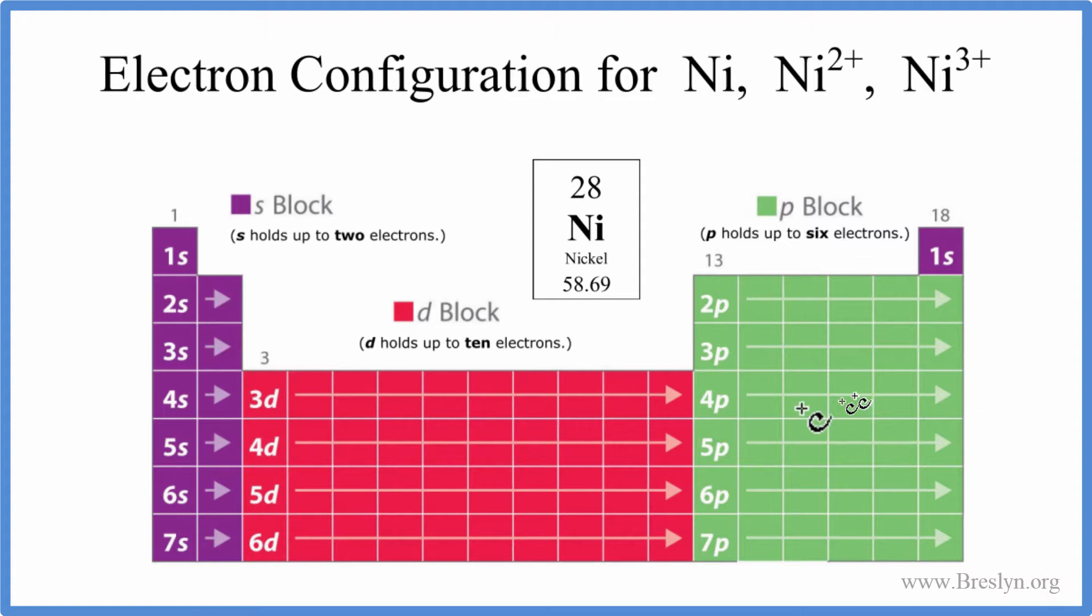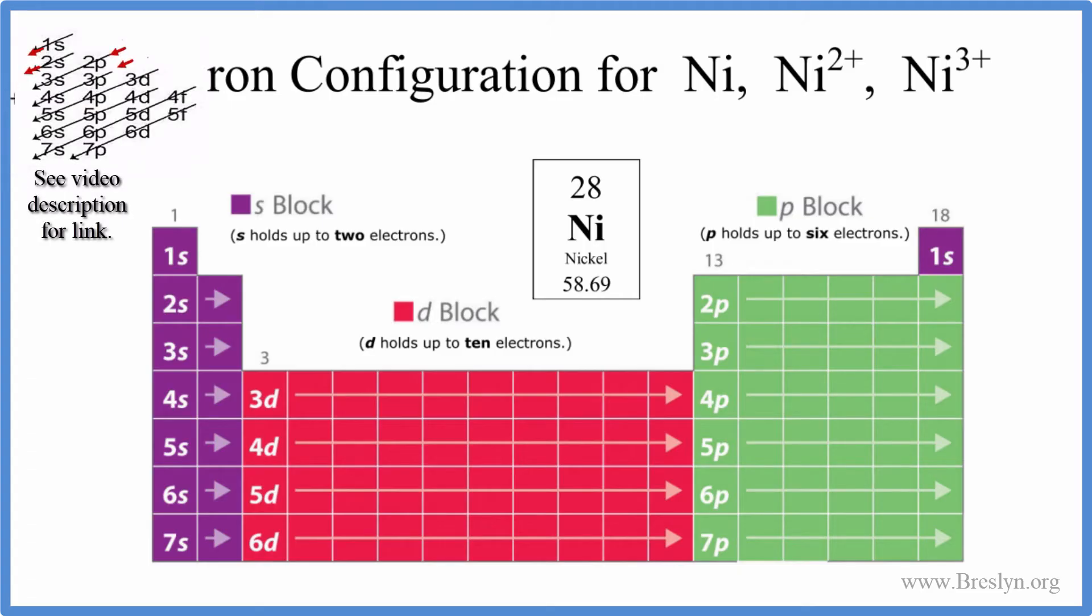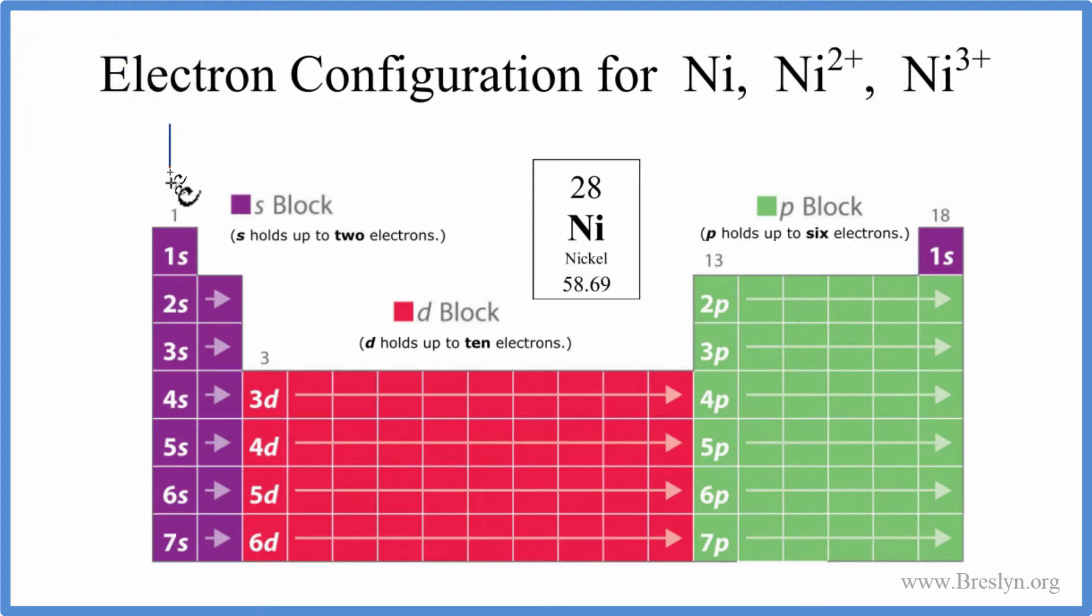For nickel we use this periodic table. We have the orbitals; they're broken up into different blocks, which is very helpful. You can also use this chart—there's a link in the description for how to do that—but I prefer this method. We'll start with 1s, so put our 1s here. s can hold up to two electrons: 1s¹, 1s².